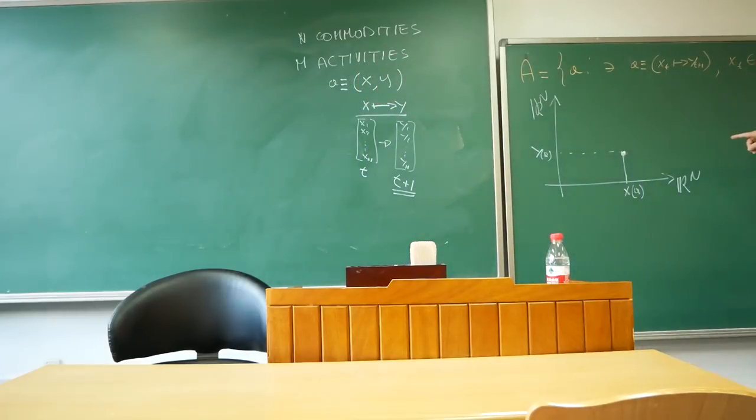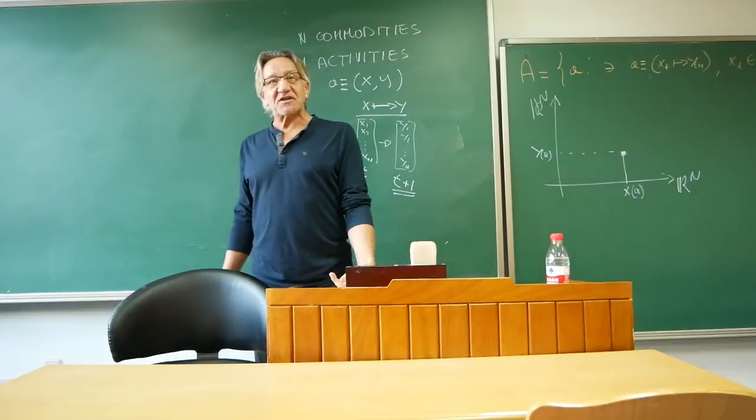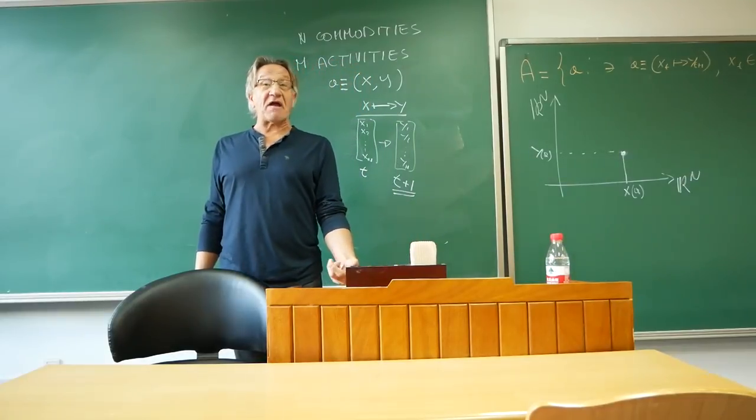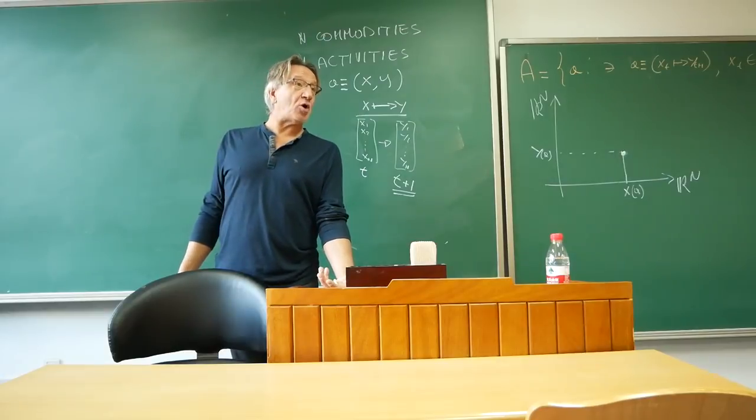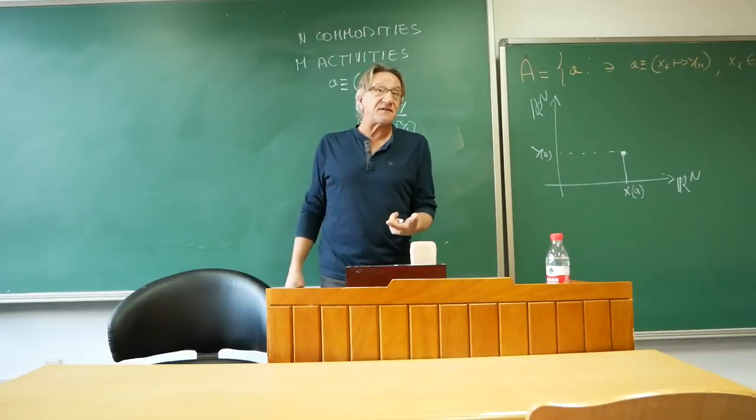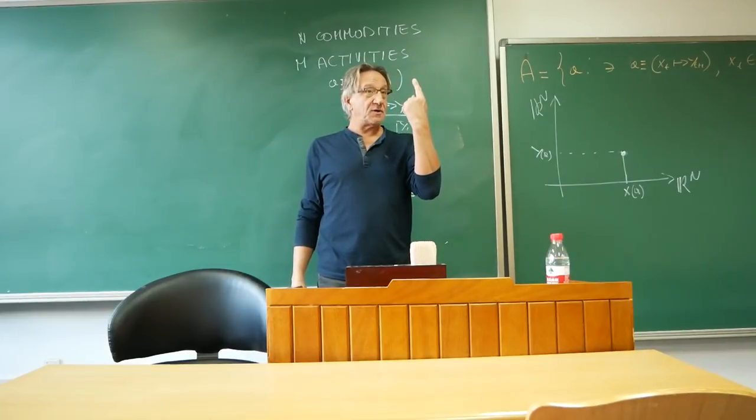So there's always some joint production in a production process. Now, so that's an activity. I want you to notice one thing, that by definition, an activity is a fixed coefficient production function, as we call it. In fact, our way of calling it is input-output. It's just an input-output formulation, a la Leontief.